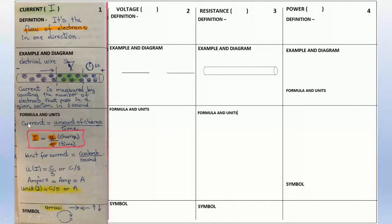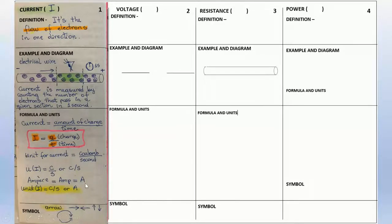Using the abbreviations: current is I, charge is Q, and time is T. The unit for charge is Coulomb and the unit of time is second, so the unit for current is Coulombs per second. The standard unit for current is A, or amp, which comes from ampere. The symbol for current is an arrow — it can go to the right, to the left, up, down, or even be a curvy arrow.